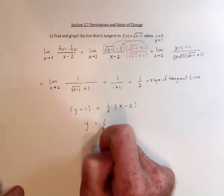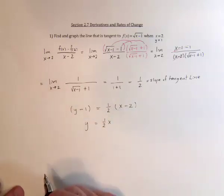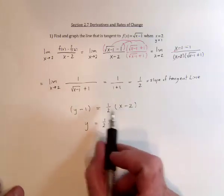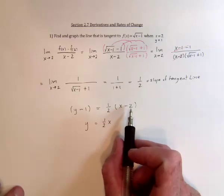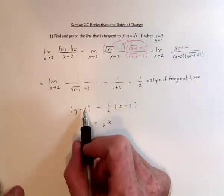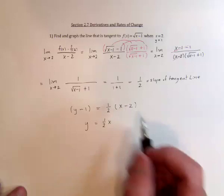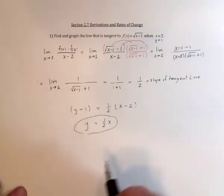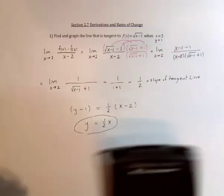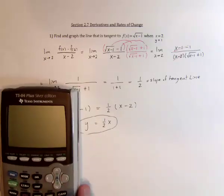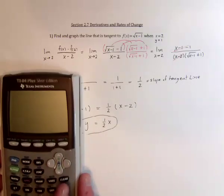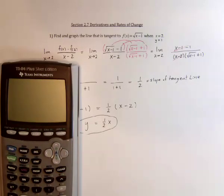If we simplify and put it in slope-intercept form, it looks like 1 half x. Distributing gives a negative 1, and adding that to the other side makes a positive 1, which cancels the negative 1. So the tangent line equation simplifies to y equals 1 half x. And as with so many things, we can use the graphing calculator to see if that looks right.